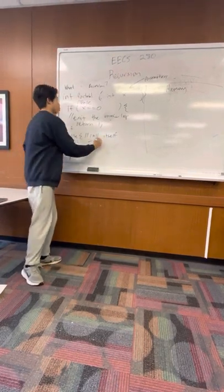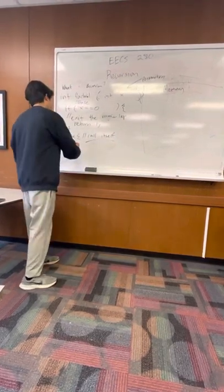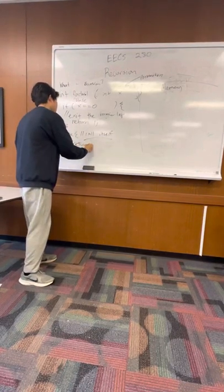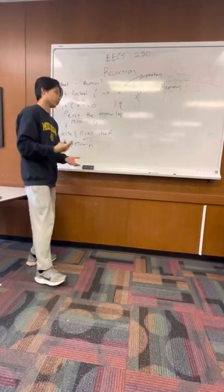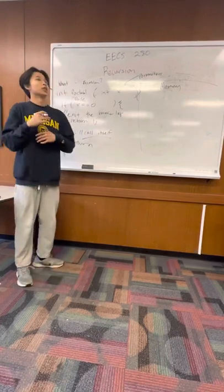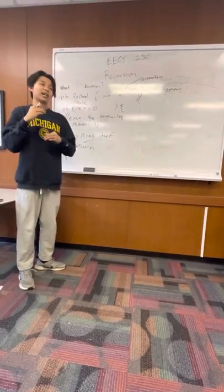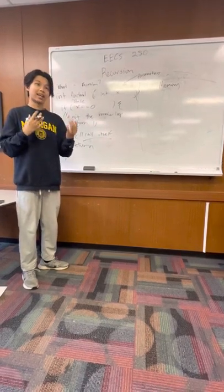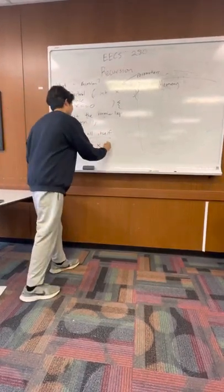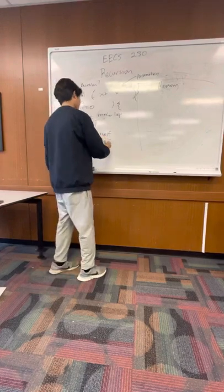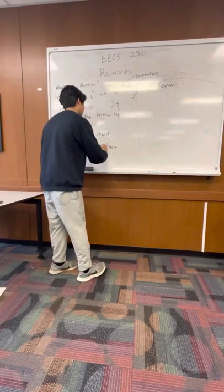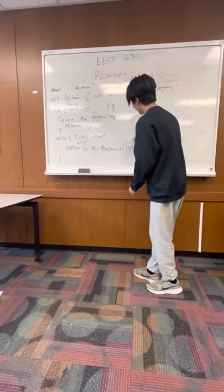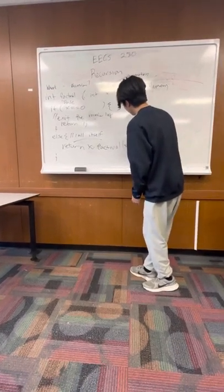So here is where we want it to call itself, and we do that by writing this code here. Obviously, we will write the function name, but we want it to multiply by the previous numbers and not just call the function. That means we have to do x times the previous number. So for here, it will be x times the factorial of x minus 1.